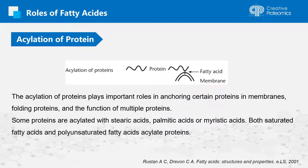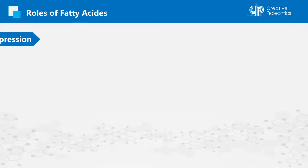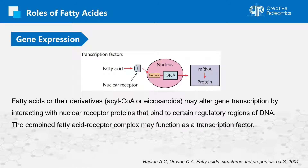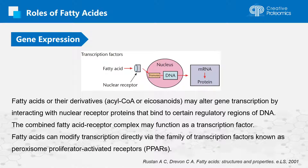Both saturated fatty acids and polyunsaturated fatty acids acylate proteins. Fatty acids or their derivatives may alter gene transcription by interacting with nuclear receptor proteins that bind to certain regulatory regions of DNA. The combined fatty acid receptor complex may function as a transcription factor. They can modify transcription directly via the family of transcription factors known as peroxisome proliferator-activated receptors.